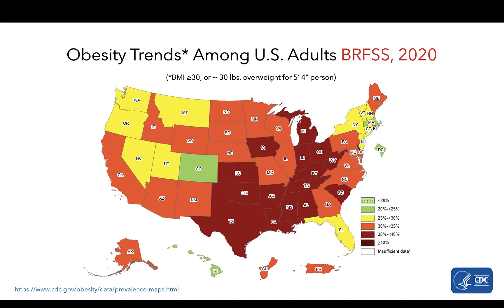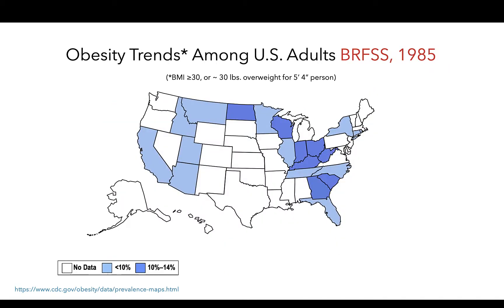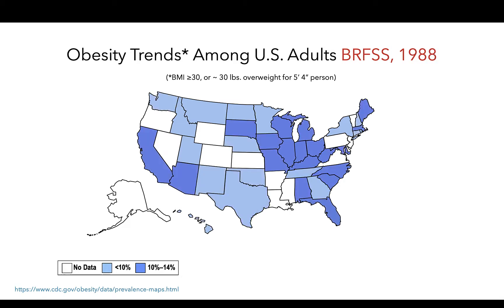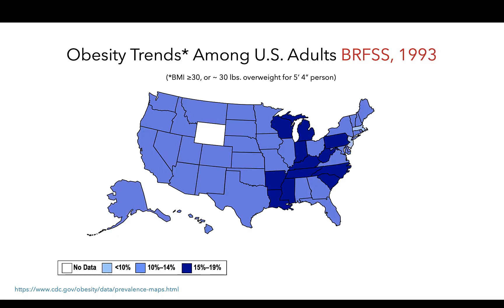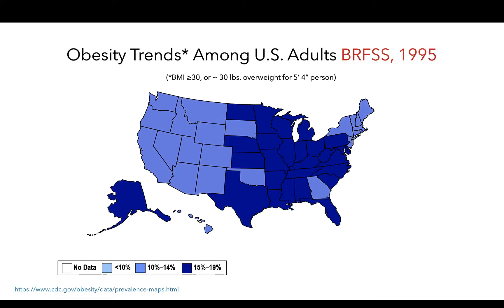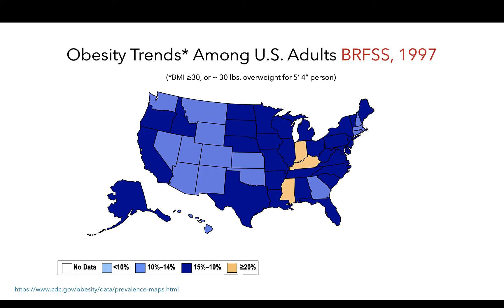Now that you're oriented to these slides and the trends that they show, let's review them one more time more quickly so you can take in these trends as well as regional differences in the prevalence of obesity. So here we are back at 1985. Notice that this increases as we move into the 90s and the increasing number of dark states, especially in the southern, eastern, and midwestern regions.